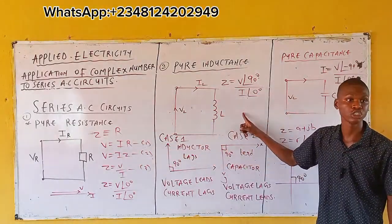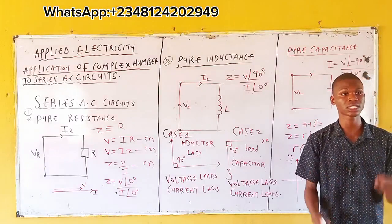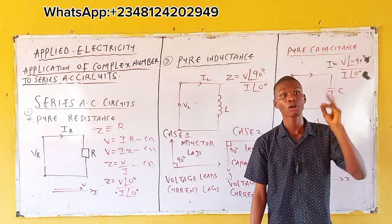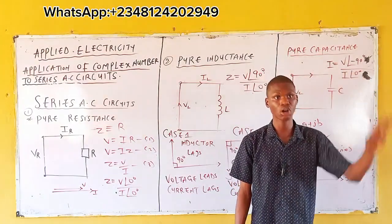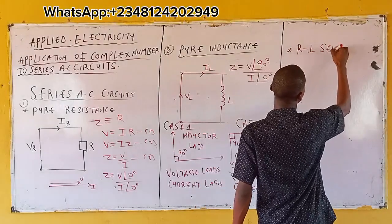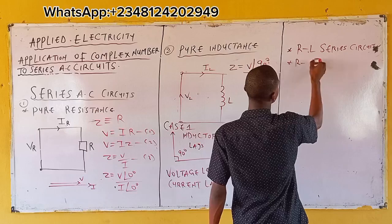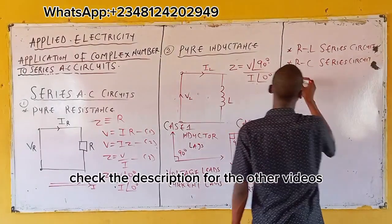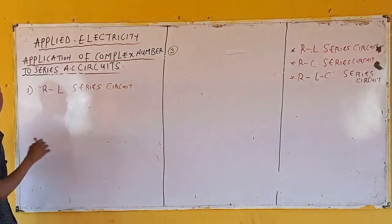Moving on, those were your circuit elements separately — first the resistor, second the inductor, third the capacitor. Now we consider circuit elements combined: resistor and capacitor, resistor and inductor, and resistor, capacitor, and inductor together — giving us the RL series circuit, the RC series circuit, and the RLC series circuit. Let's draw a diagram.